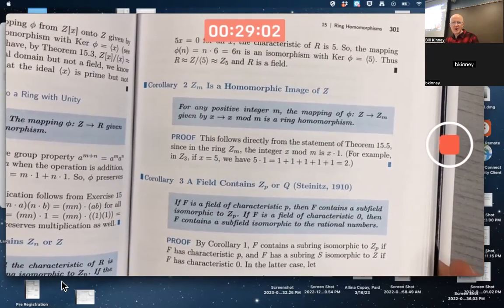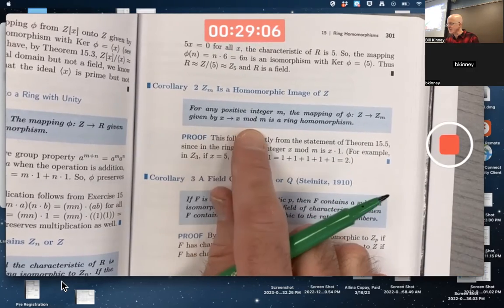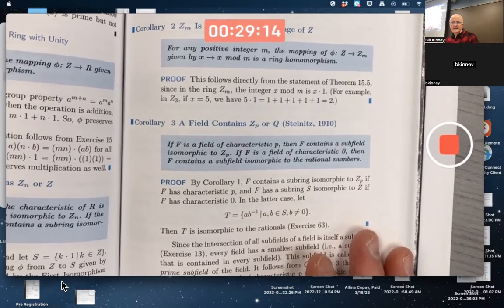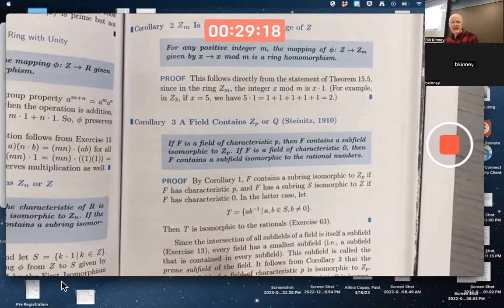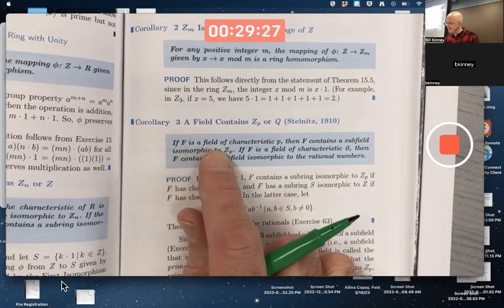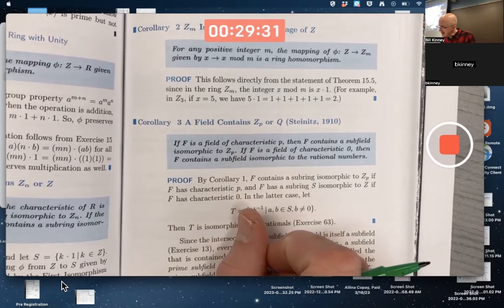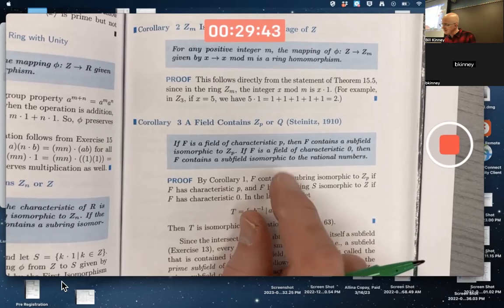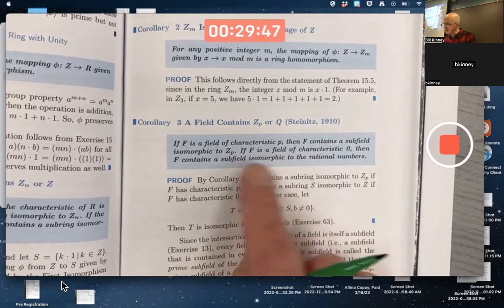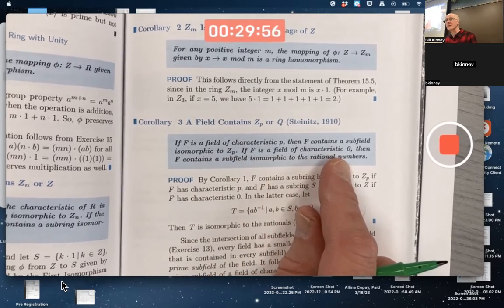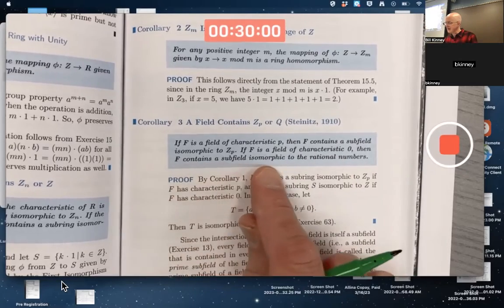Corollary two is kind of similar. Z_M is a homomorphic image of Z. Essentially, you're mapping an integer to that integer mod M. Another corollary is that any field contains Z_P for some prime P or Q, the rationals. That's interesting. If F is a field of characteristic P, where P is assumed to be prime here, the author doesn't actually say that, does he? P is assumed to be prime because Z_N is not a field when N is not prime. If F is a field of characteristic P, yes, P must be prime, then F contains a subfield isomorphic to Z_P. And if P is prime, Z_P will be a field. If F is a field of characteristic zero, like the rationals or like the reals or like the complex numbers, then F contains a subfield isomorphic to the rationals.